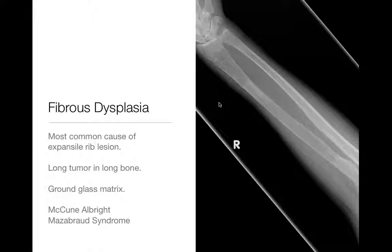You can have polyostotic fibrous dysplasia. There are two main syndromes: McCune-Albright, which you'll only see in girls, associated with precocious puberty and café au lait spots; and Mazabraud syndrome, associated with soft tissue myxomas and polyostotic fibrous dysplasia. Usually it's just a single solitary lesion in the long bones. The proximal femur is a common location, and if it's long-standing there, it gives you the classic shepherd's crook deformity.